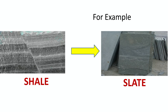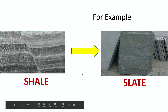Here we have shale — a clastic sedimentary rock — and under heat and pressure it can become a rock called slate. You'll see slate in a lot of hardware stores; it's often used as roofing and in landscaping. It's a good rock. So shale is the parent rock for slate.